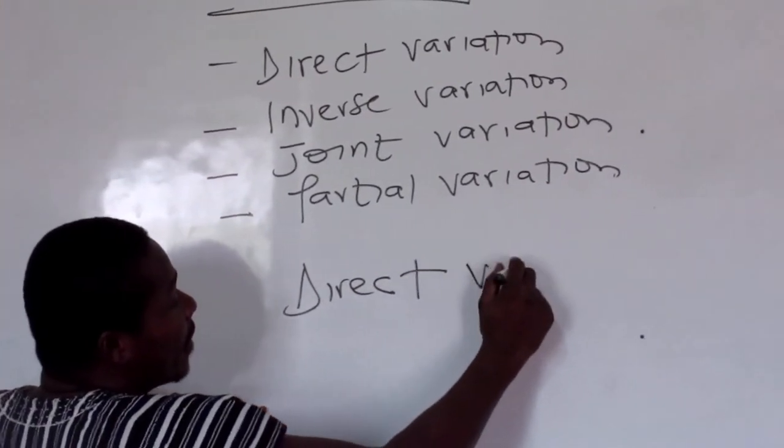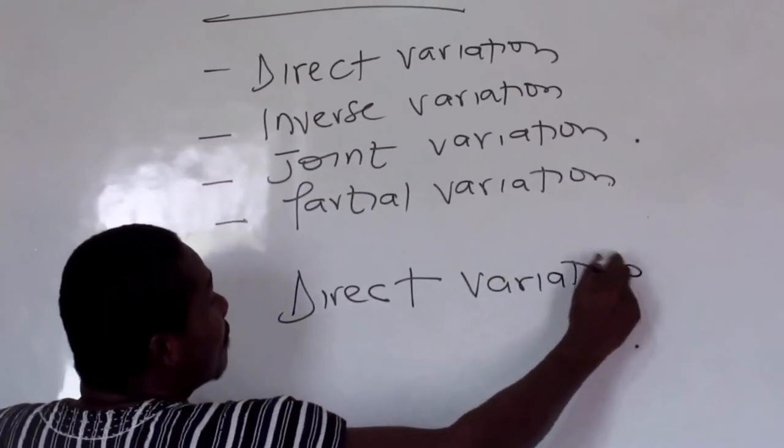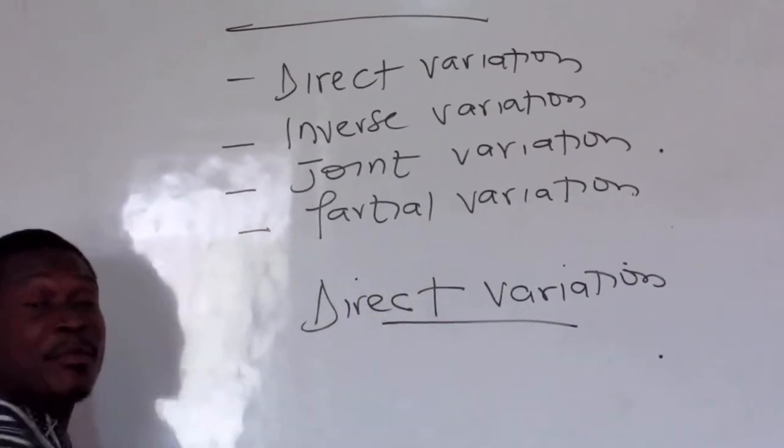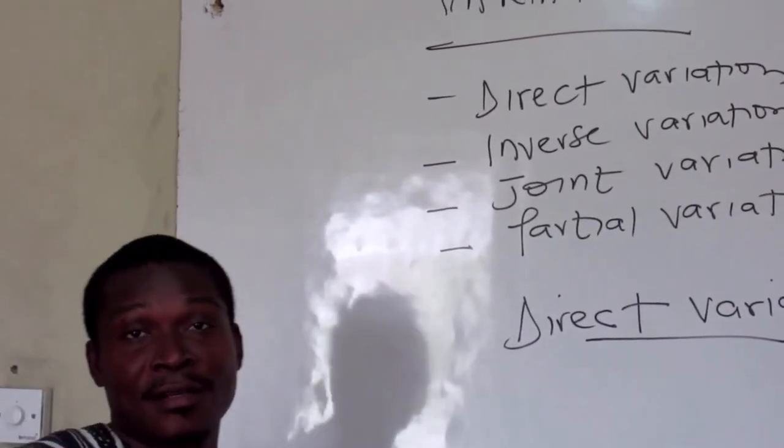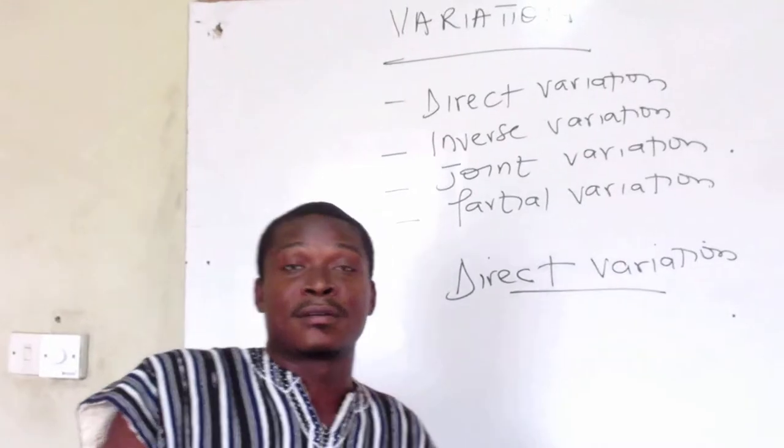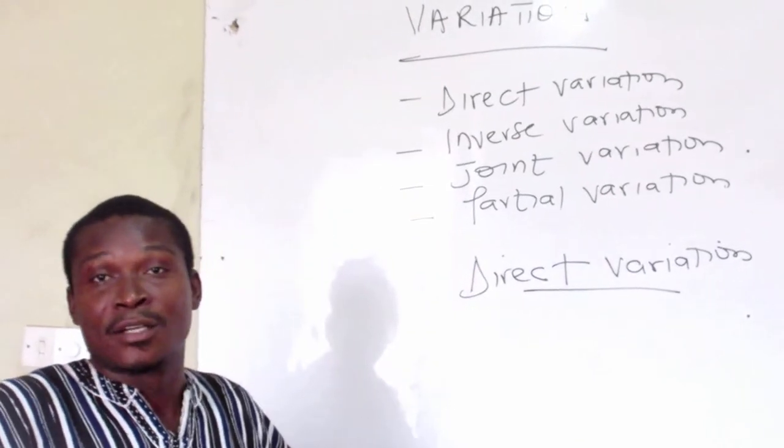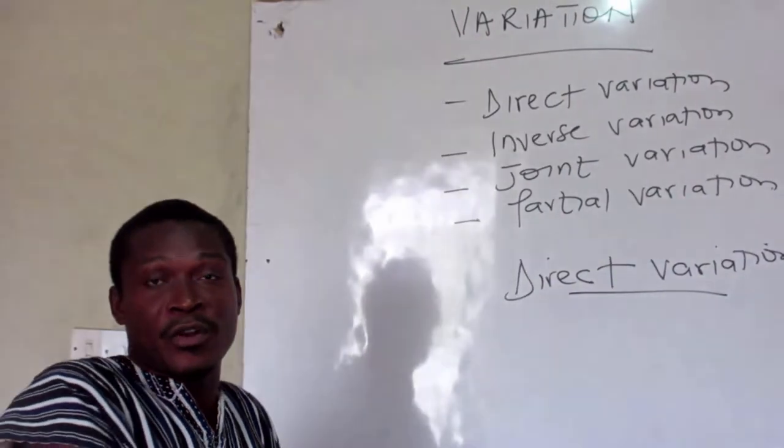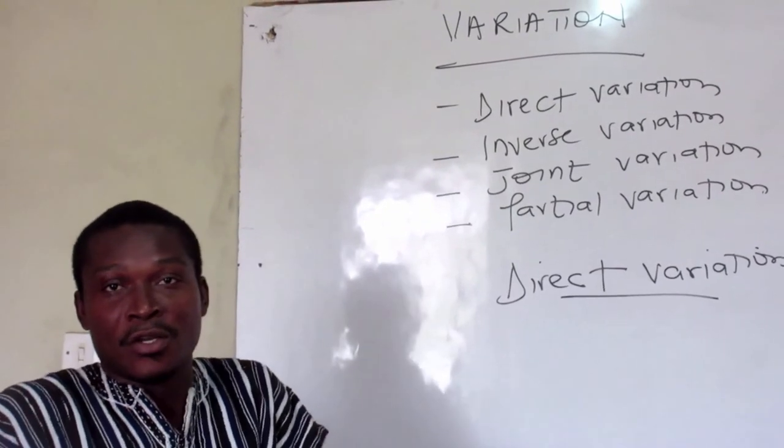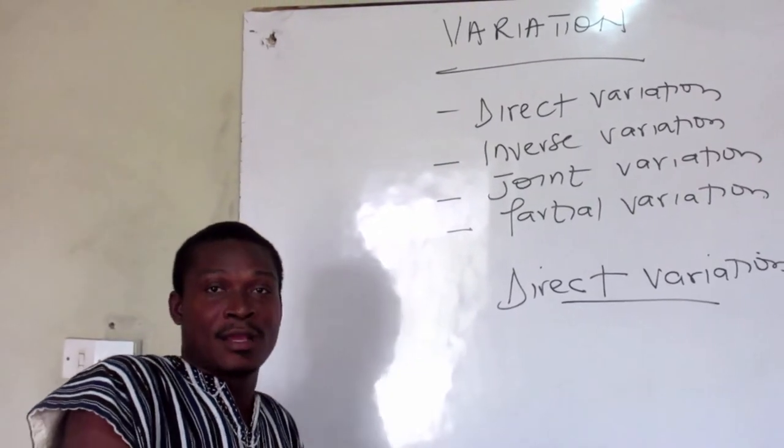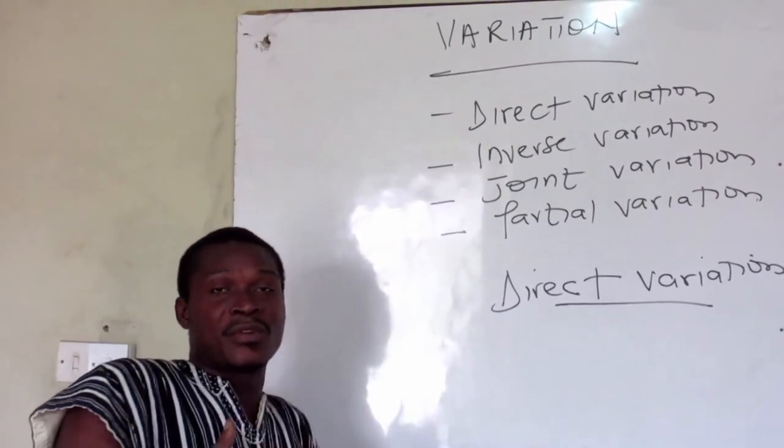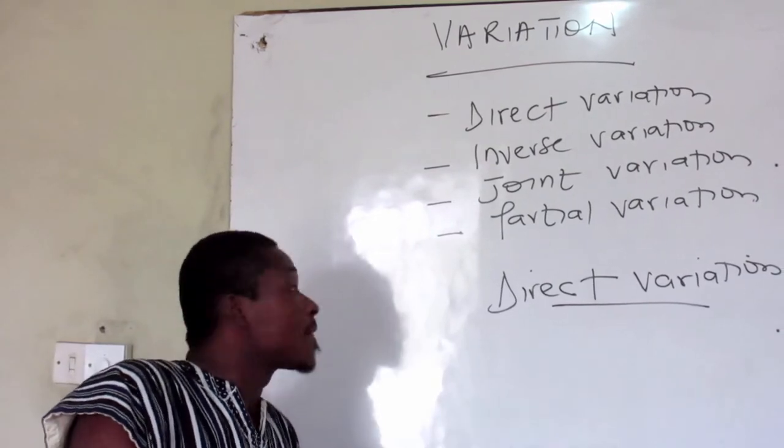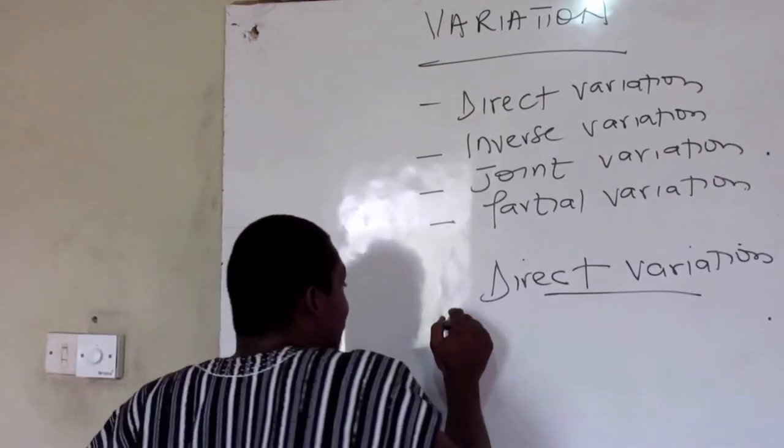So we first start with direct variation. As the name implies, direct variation, that is a direct relation. Let me say direct: when I increase, the other quantity also increases. So you have two variables x and y.